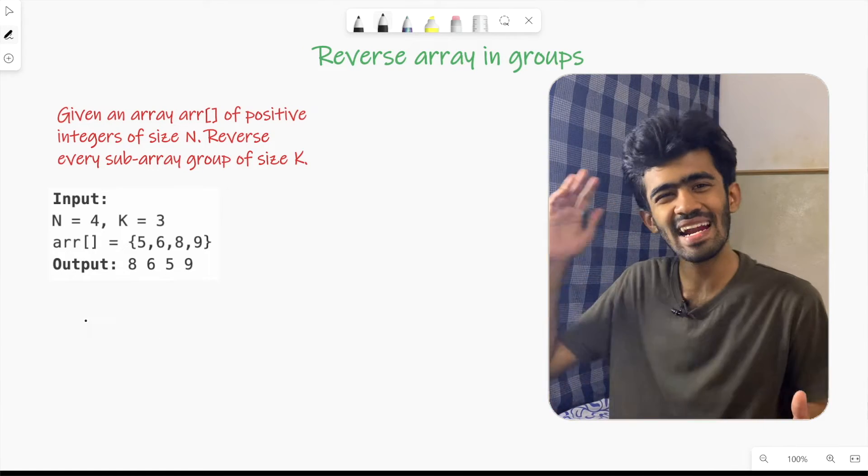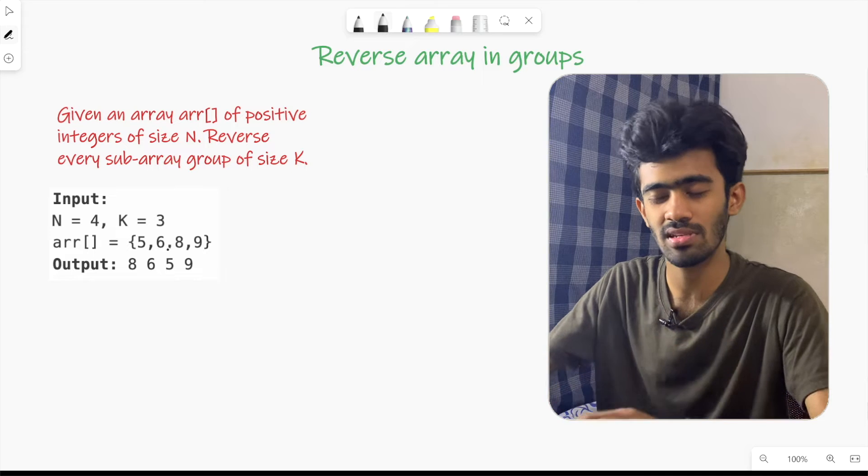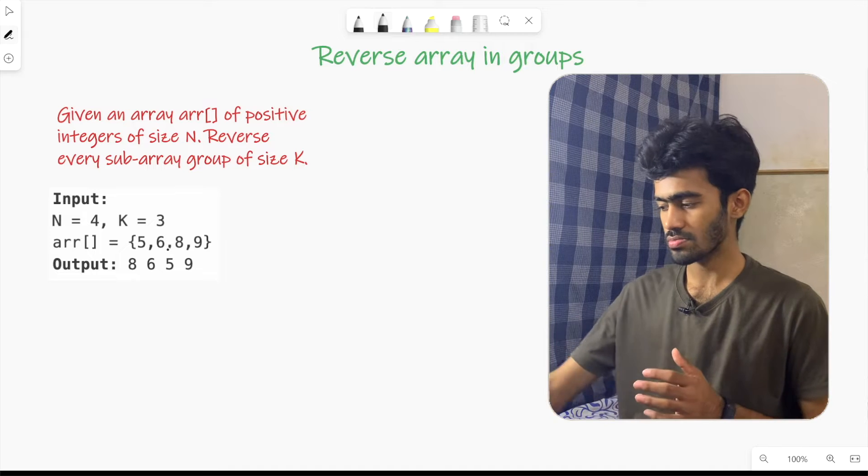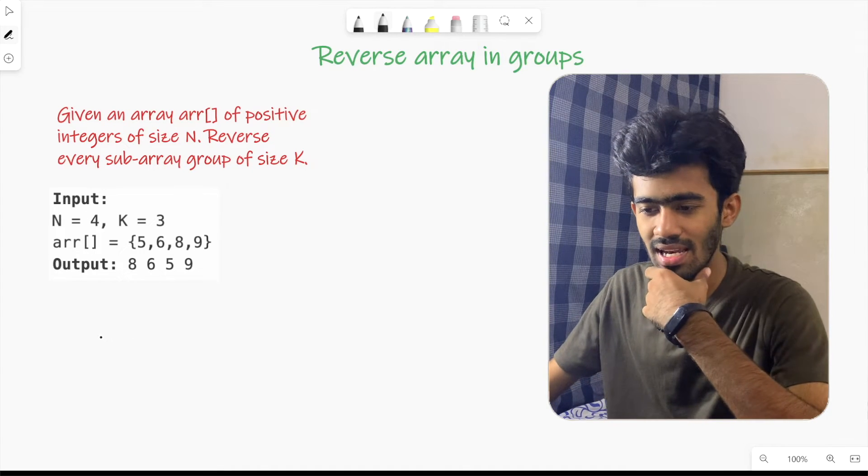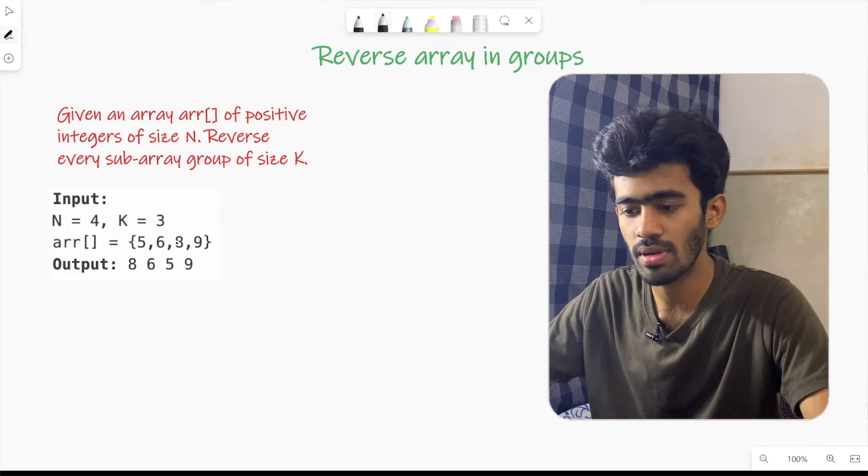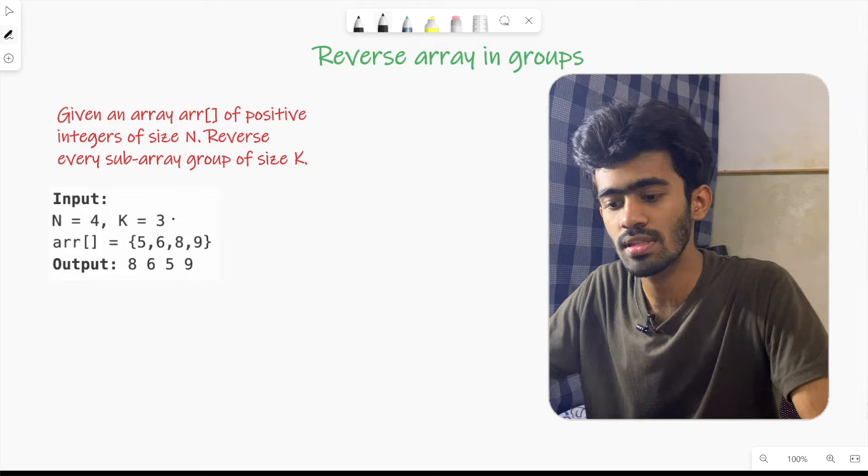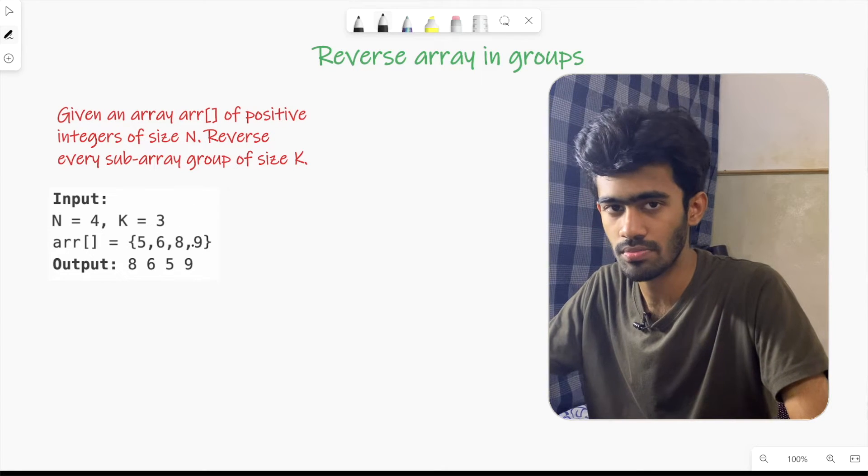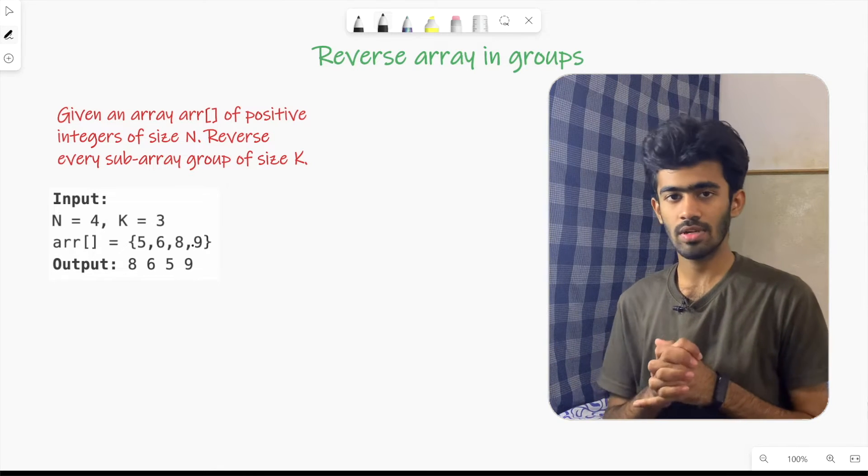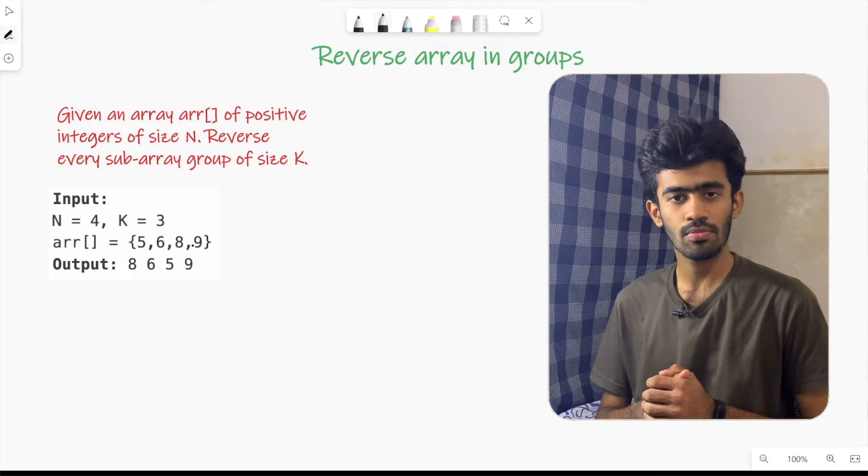If we want to reverse groups, we need to swap within each K-sized group. What do we need to do? We need to use a for loop. Basically this method uses the swap logic. If you go to code, then you will be able to do it.